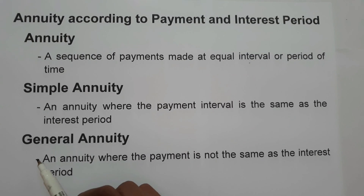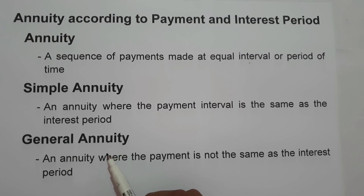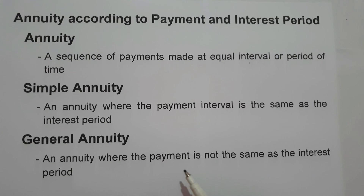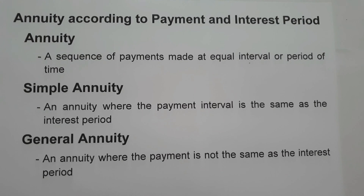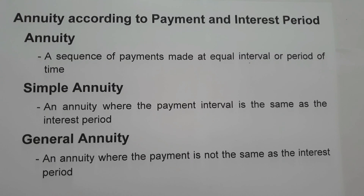The second type is the general annuity. General annuity is an annuity where the payment interval is not the same as the interest period. That means if the payment interval is not equal to the conversion period, then the given example is a general annuity.